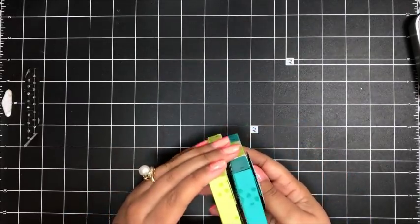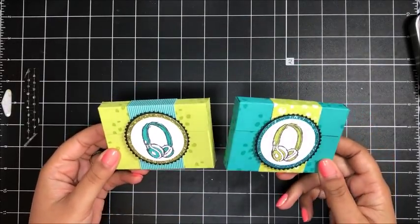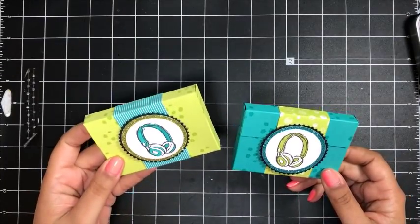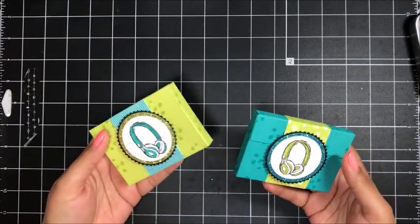Here's the little box that we're going to make today. I have two versions: the Bermuda Bay version and the Lemon Lime Twist. Today I'm going to show you how to make the Lemon Lime Twist version.